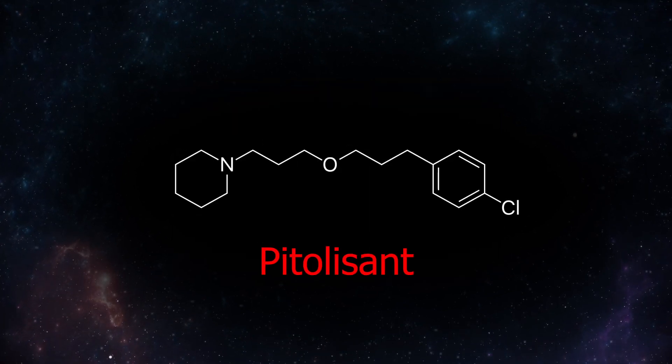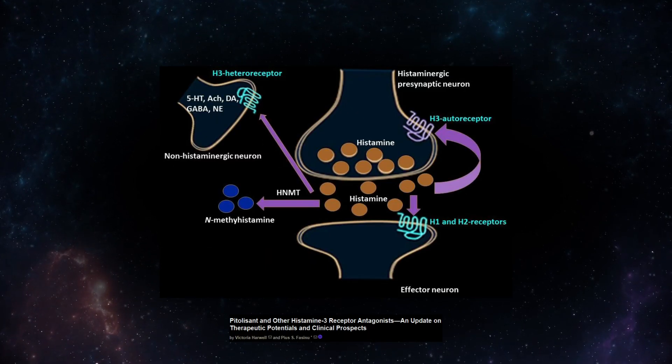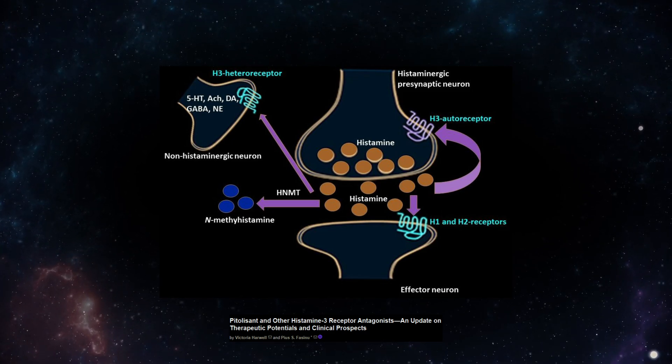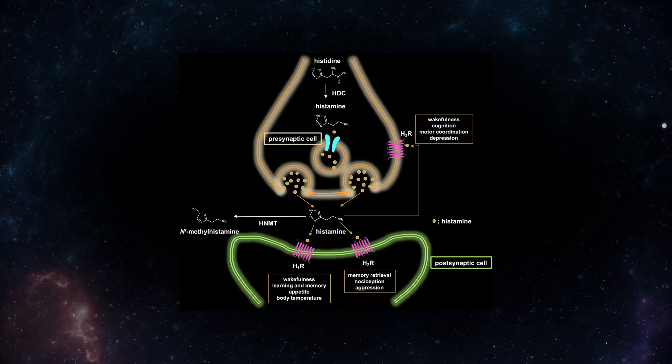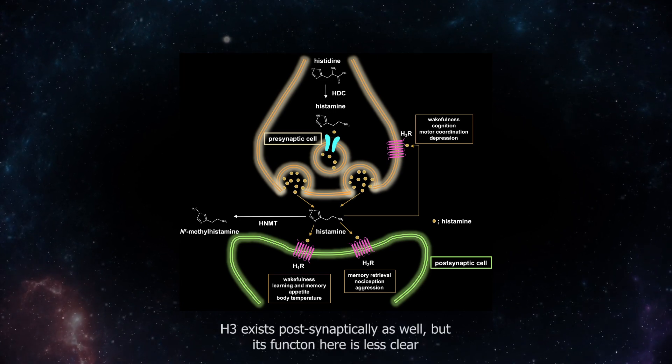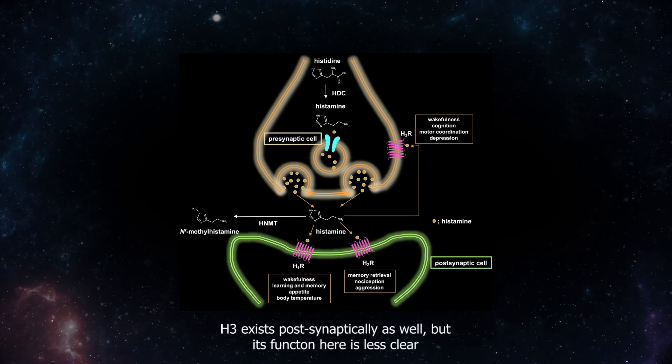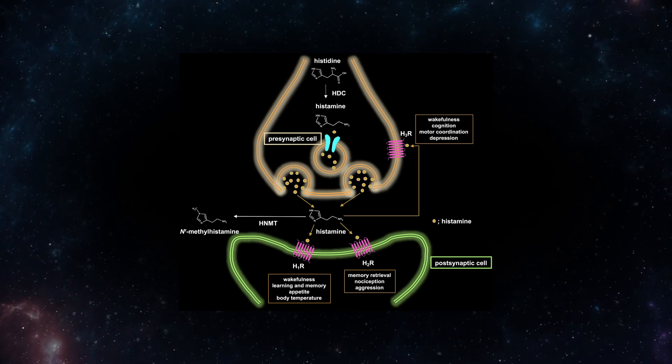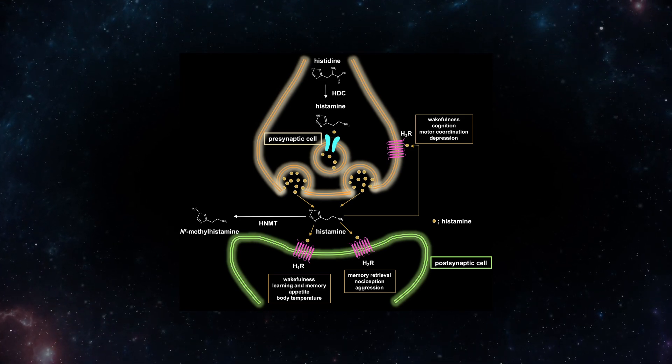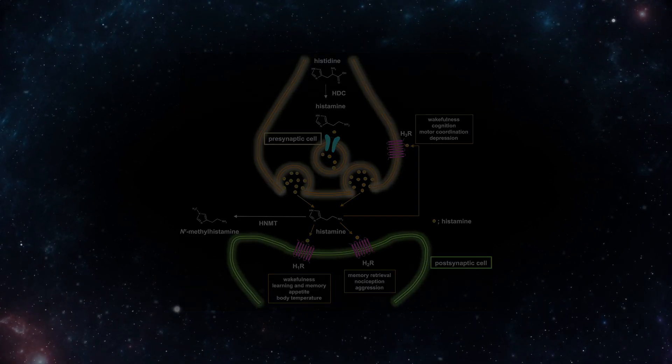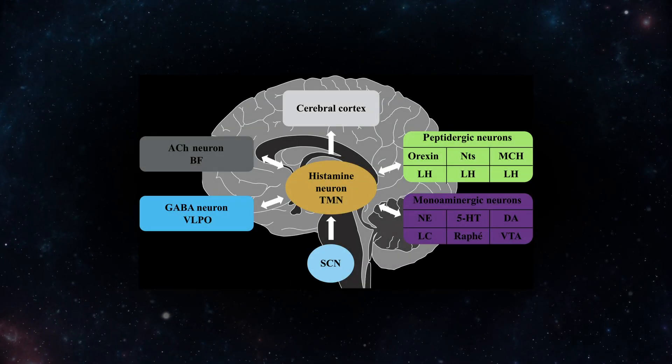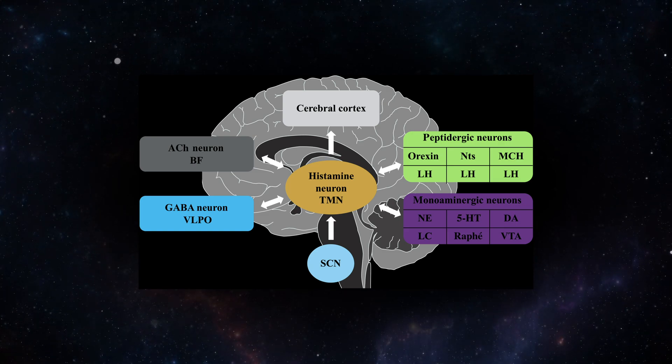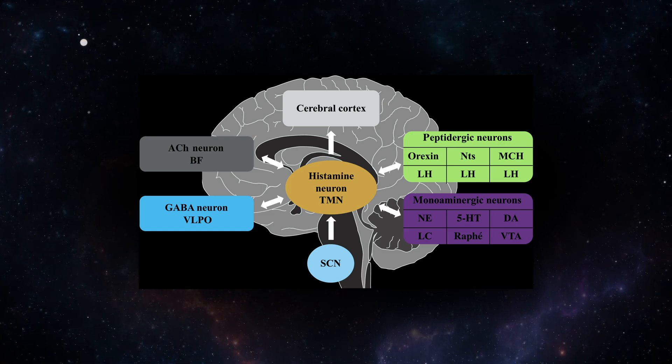On the topic of eugeroics, there's pitolisant, an inverse agonist of the histamine-3 receptor, an auto-receptor for histamine, primarily located in the central nervous system. By inverse agonizing this receptor on presynaptic neurons, pitolisant essentially tricks the neuron into sensing a scarcity of histamine in the synapse, prompting it to release histamine to counteract this false signal. Because histaminergic pathways in the brain are heavily involved in wakefulness, it's thought that this increase in histaminergic tone is responsible for its eugeroic effect.